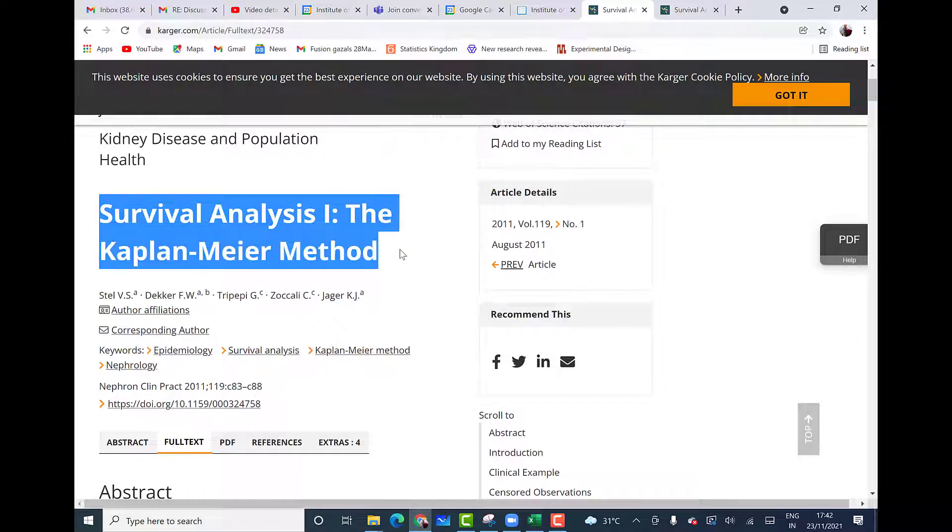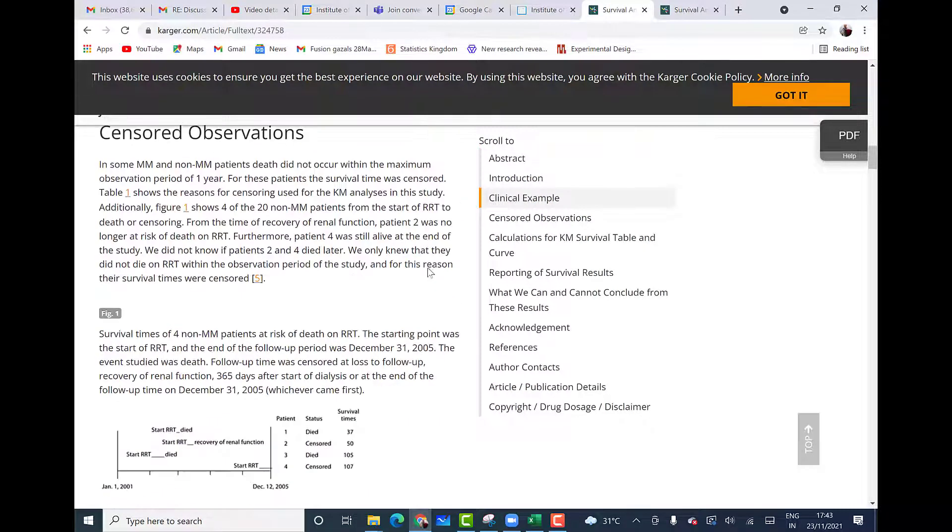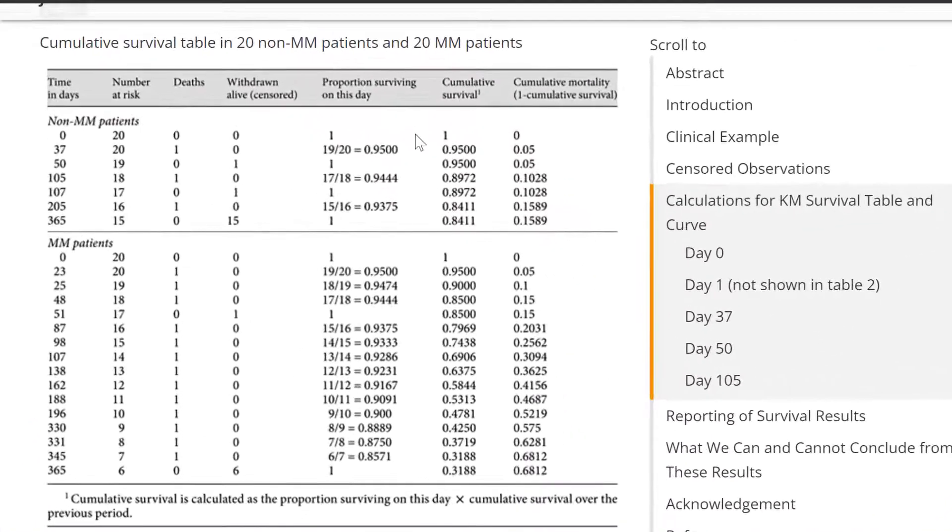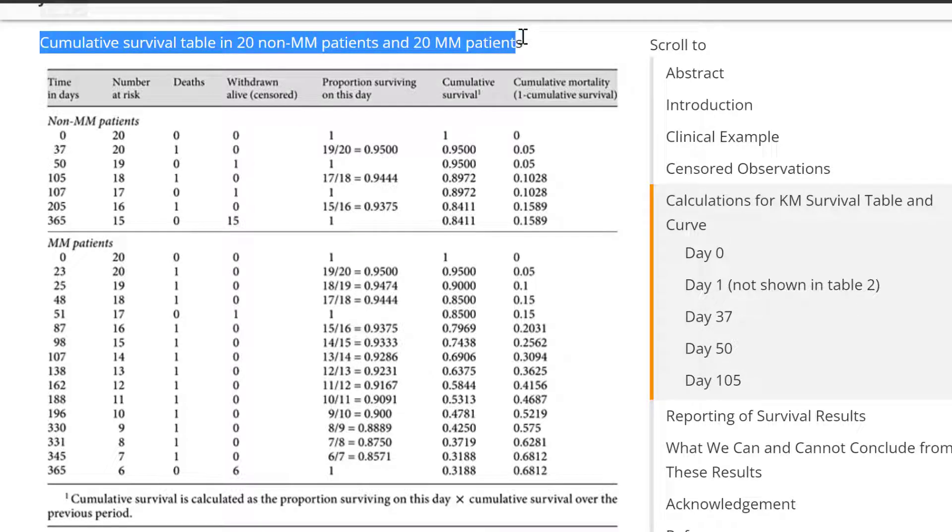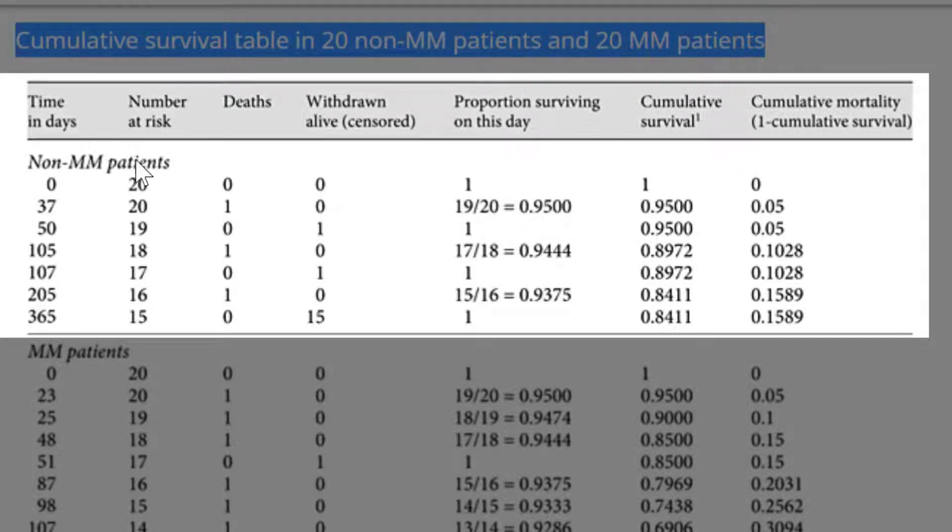I find an article from a journal and this is about kidney disease and population health. But it will be similar in case of the procedure will be similar in case of other diseases. So this is about survival analysis the Kaplan-Meier method. And it shows the probability of survival in case of different types of patients. You can go to the article on your own. I am just showing one table for two different types of patients. This shows cumulative survival table in 20 non-MM patients and 20 MM patients. MM and non-MM are categories for medical purposes. And the first table shows about non-MM patients and time in days is 0, 37, 50, etc. Number at risk. Similar procedure is followed as we have shown in our earlier two examples. And population surviving on this day and cumulative survival probabilities have been calculated in a similar manner.